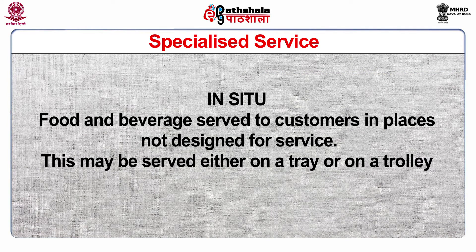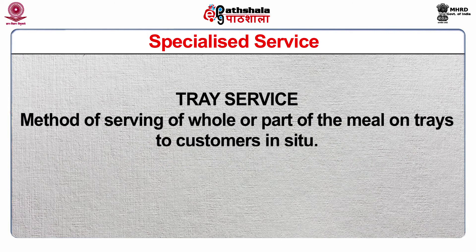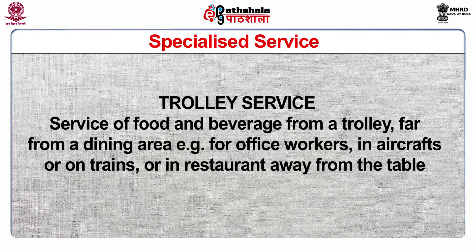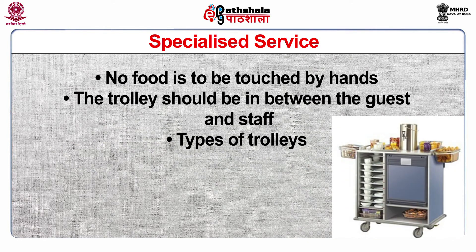Next is in-situ service — food and beverage served to the customer in places not designed for service, either on a tray or on a trolley. Number A is tray service: methods of serving the whole or part of a meal on trays to customers in-situ, used in hospitals, aircrafts, rail service, ODC, lounge service, room service, and home delivery. Number B is trolley service: service of food and beverage from a trolley far from a dining area, for example for office workers, in aircrafts or on trains. In this service, no food is to be touched by hands, and the trolley should be between the guest and the staff.